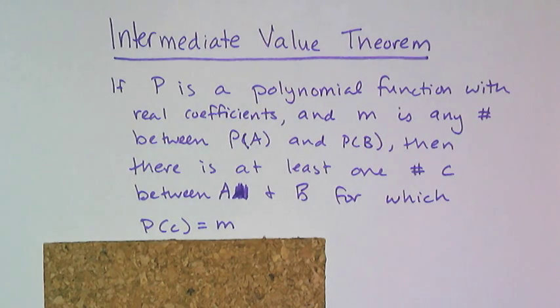What the Intermediate Value Theorem says is: if p is a polynomial function with real coefficients and m is any number between p(a) and p(b), then there is at least one c between a and b for which p(c) equals m.